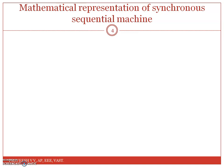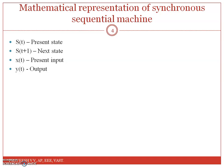You can represent a sequential circuit using a mathematical representation. Here, I will be using s(t) for present state and s(t+1) for the next state, x(t) for the present input, and y(t) for the output. I will be forming an expression for output y(t) and next state s(t+1) in terms of present state and present input.